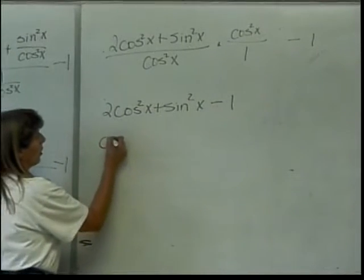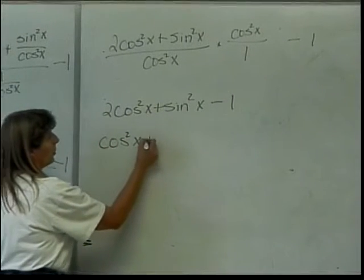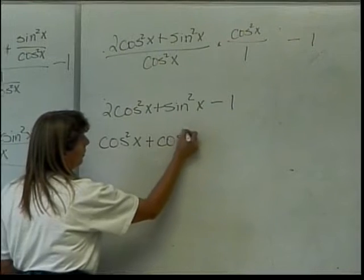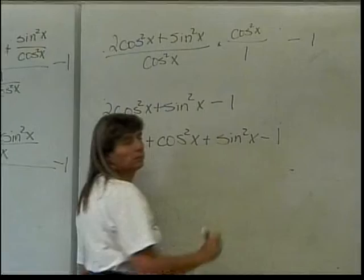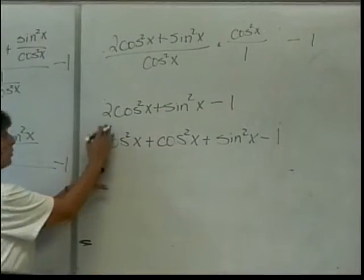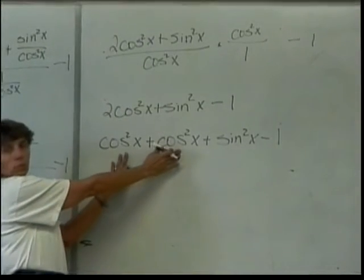Well, this just means I have 2 of these. So, I can say this is cosine squared of x plus another cosine squared of x plus the sine squared of x minus 1. So, I just broke these 2 up into their 2 pieces.